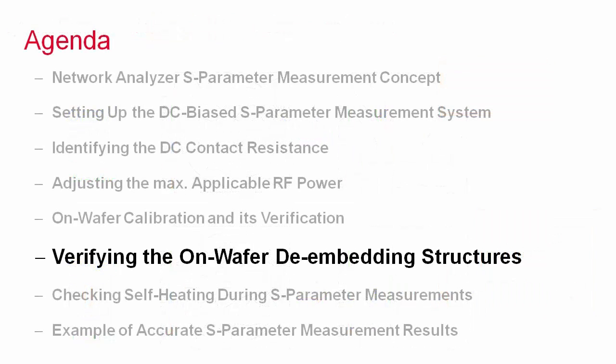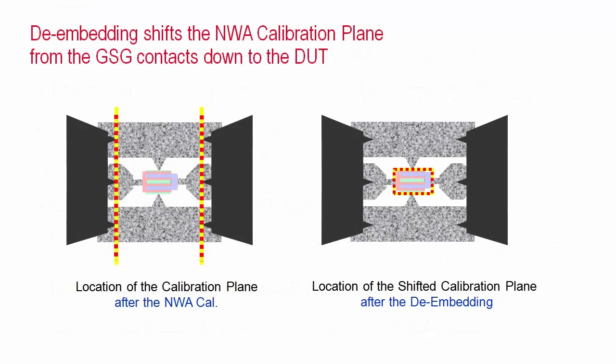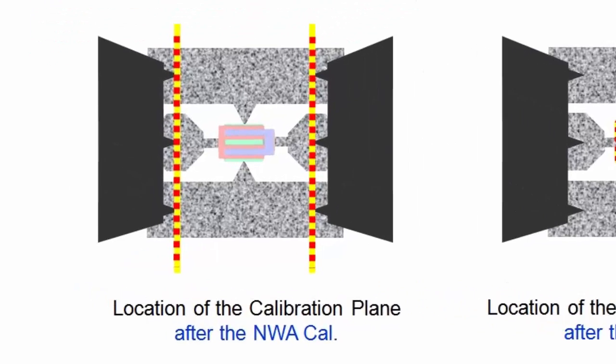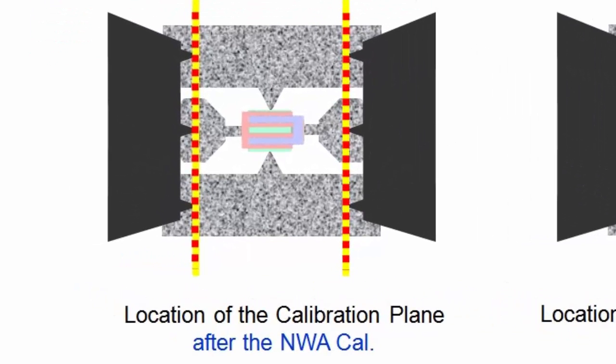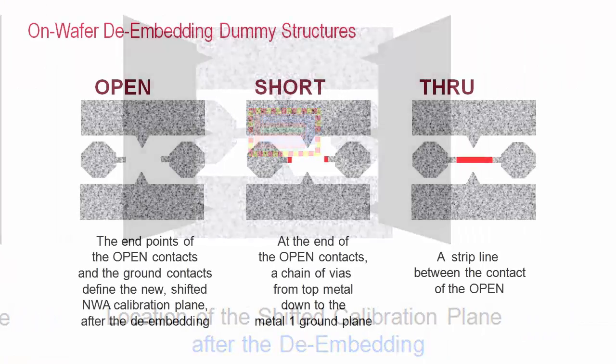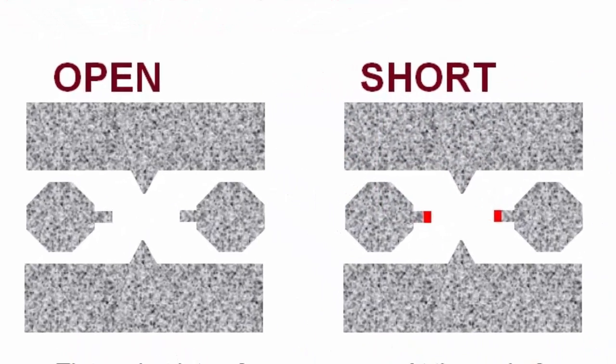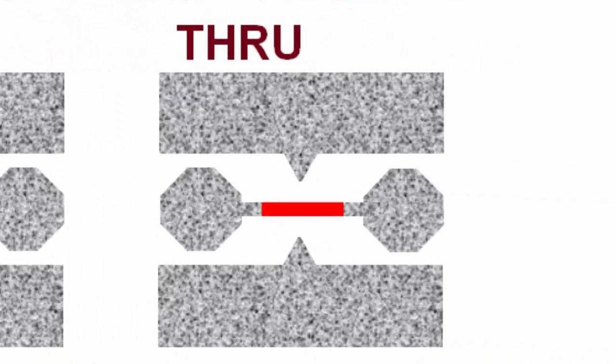The next step in our flow is the verification of the de-embedding structures. De-embedding means to shift the calibration plane from the GSG probe contact location down to the limits of the device model. A best practice verification is to have, besides the open and short on-wafer dummy, also a through dummy available which replaces the later DUT by a strip line.